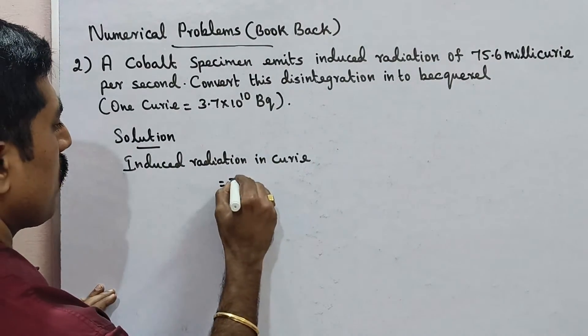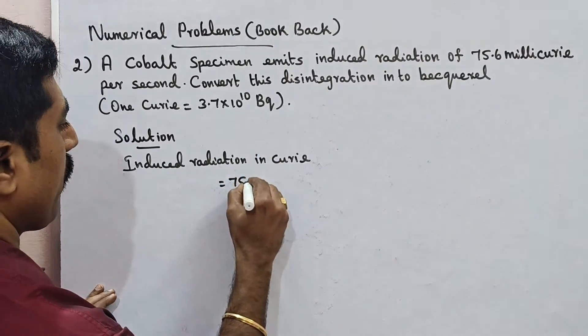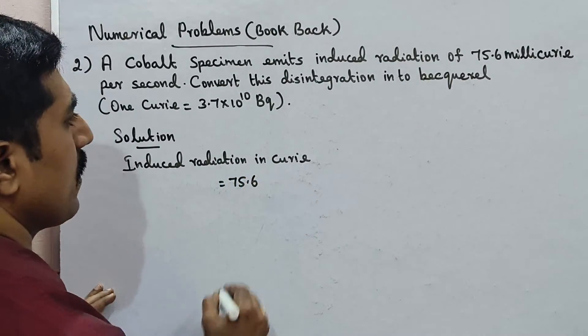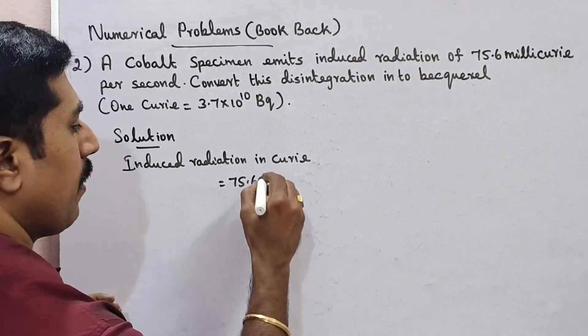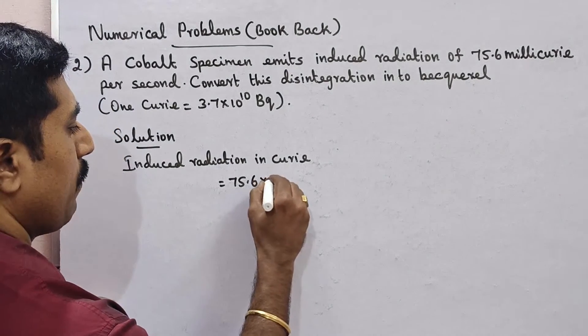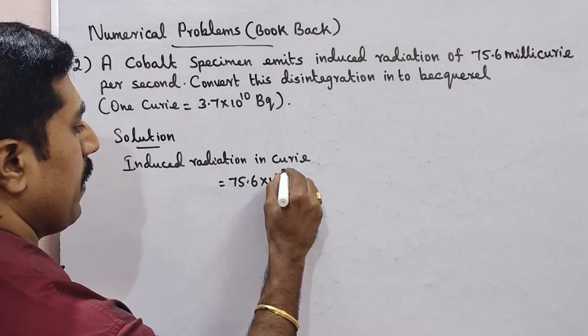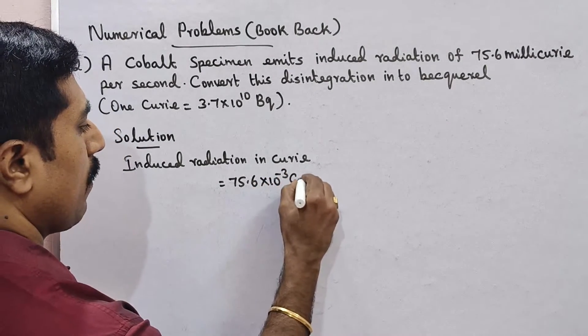Induced radiation is equal to 75.6 millicurie. 1 millicurie equals 10 power minus 3 curie.